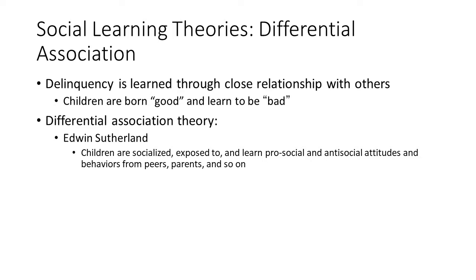Criminologist Edwin Sutherland developed the differential association theory, which emphasized the role of socialization in the development of delinquent behavior, as opposed to mental defects or genetic influences. He claimed that delinquent behavior is learned through communication and interaction with others — peers and family. He further stated that kids learn the techniques of committing crimes as well as the attitudes and rationalizations that promote delinquent behavior, for example the phrase 'don't get mad, get even.'